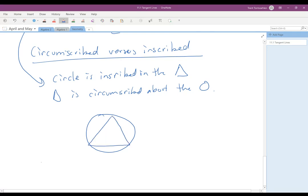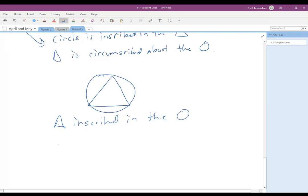but that would be the picture that looks like this. Right, for this one, it would be the triangle inscribed in the circle, or the circle is circumscribed about the triangle. So make sure you understand the way that that terminology gets used.